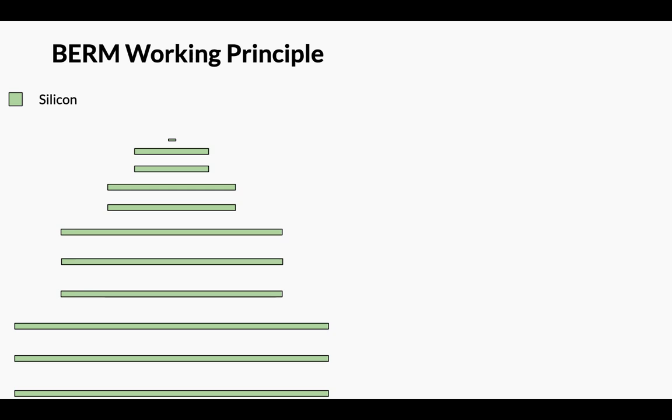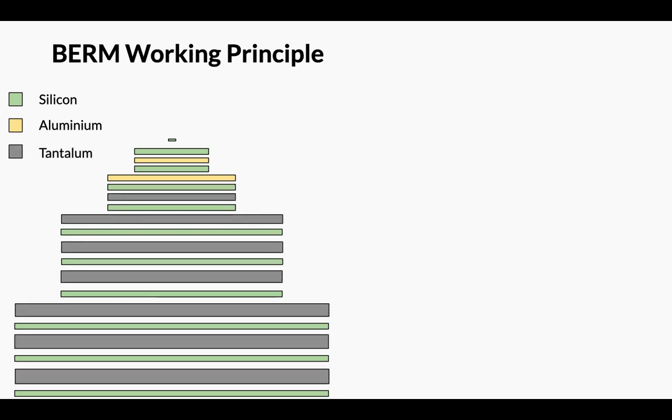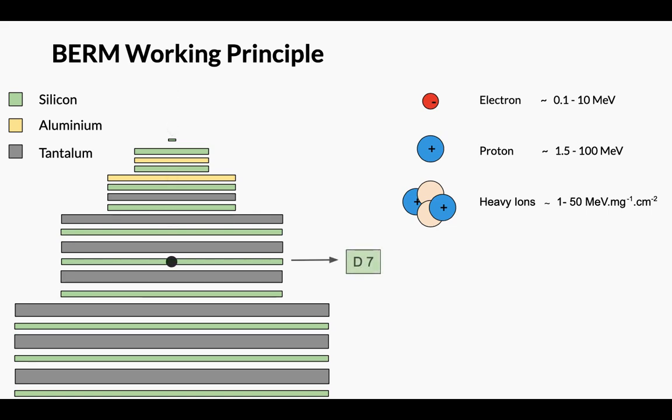BERM is composed of 11 silicon detectors, interleaved by aluminium and tantalum. It has a 40 degree angle of view and it can detect electrons, protons and heavy ions in certain energy ranges. It is able to detect particle energy from the energy deposit in the detectors and their type, taking into account which was the detector where was deposited the maximum energy.